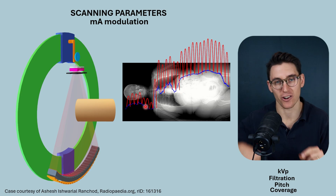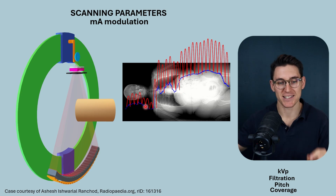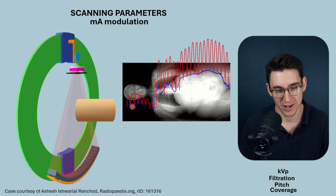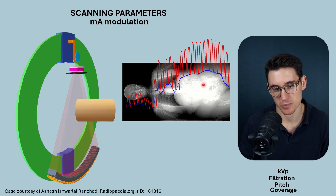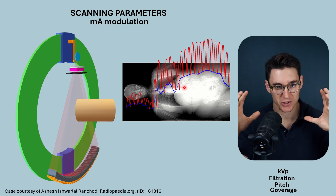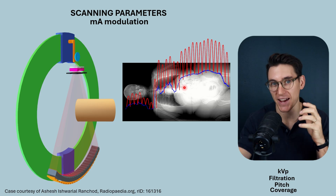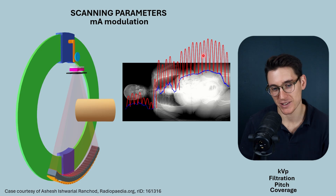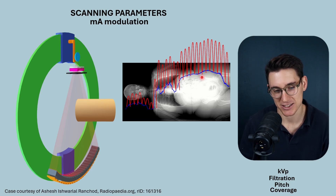We can combine these two factors — angular modulation and z-axis modulation — to get our overall current modulation for a specific patient. Notice how we still get that oscillating sine wave based on the dimensions of the patient, but the baseline current changes based on the density in the z-axis. This is perhaps the most difficult physics concept in the factors that influence dose, so I'd encourage you to spend time understanding the difference between angular modulation and z-axis modulation.